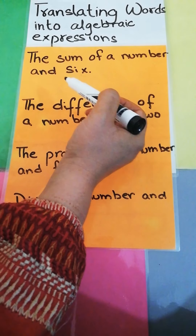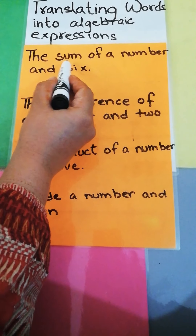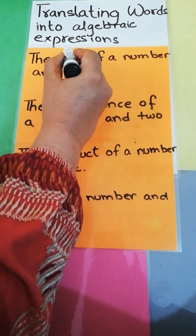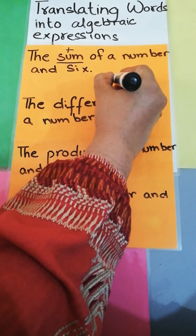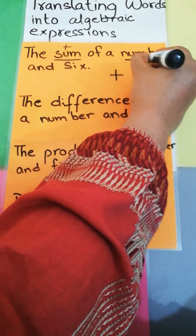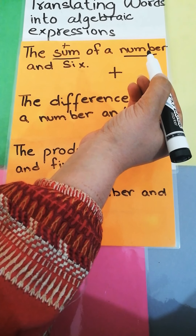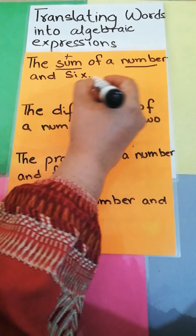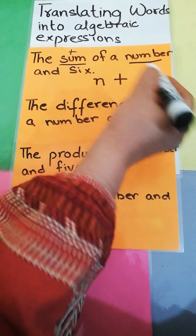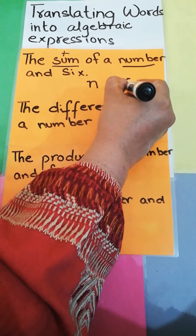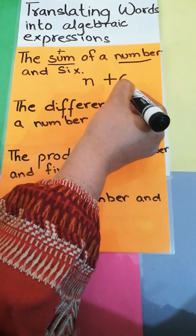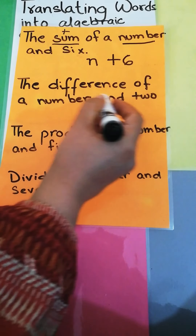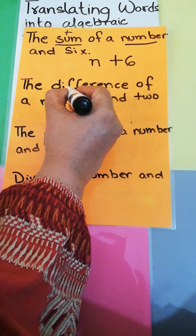The sum of a number and six. 'Sum' means addition. The number can be any letter — in algebra, any letter from a, b, c to x, y, z. So the sum of a number, for example n, and six gives us n + 6. This is the algebraic expression.